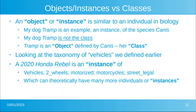Looking at the taxonomy of vehicles we defined earlier: a 2020 Honda Rebel is an instance of vehicles → two-wheeled → motorized → street-legal motorcycles. We can have many many instances of that class. If I happen to own a 2020 Honda Rebel, that is simply one instance — one object — of the class street-legal motorcycle, which inherits from motorcycles, which inherits from motorized, which inherits from two-wheeled, which inherits from vehicle.